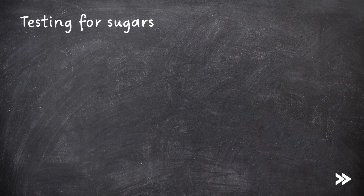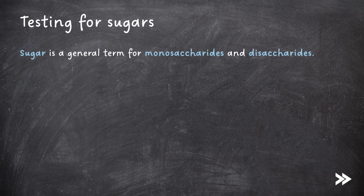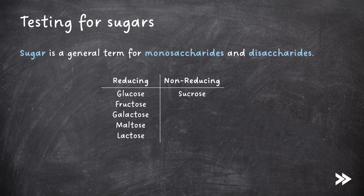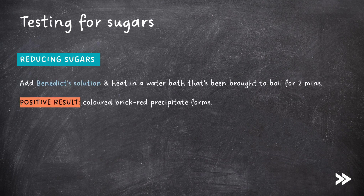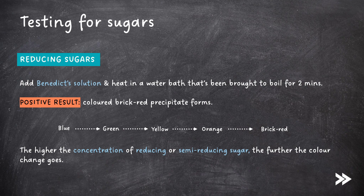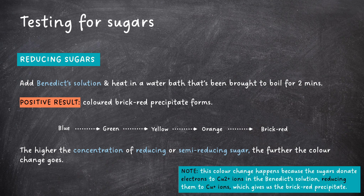Finally, we need to know some biochemical tests for reducing sugars, non-reducing sugars and starch. Sugar is a general term for monosaccharides and disaccharides. They can be classed as reducing and non-reducing. Reducing sugars include the monosaccharides glucose, fructose and galactose, and the disaccharides maltose and lactose. Non-reducing sugars include sucrose. For reducing sugars, we add Benedict's solution and heat in a water bath brought to boil for two minutes. The positive result is a coloured brick-red precipitate. The higher the concentration of reducing sugar, the further the colour change goes. This colour change happens because the sugars donate electrons to Cu²⁺ ions in the Benedict's solution, reducing them to Cu⁺ ions, which gives the brick-red precipitate.